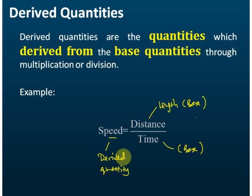So what is derived quantities? Derived quantities are the quantity which derived from what? From base quantity. So distance and time are the base quantity. Speed derive from distance and time. And therefore, speed is called the derived quantity.